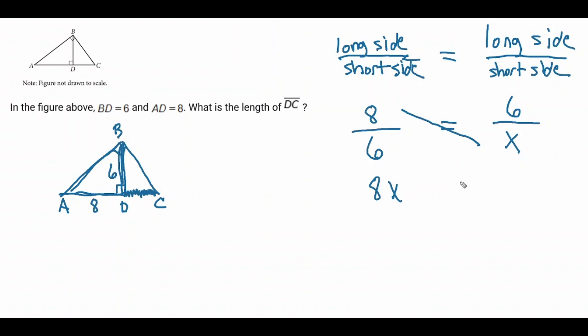8x equals 36, and then you get x by itself, so you divide by 8 on both sides. You throw 36 divided by 8 in your calculator, and you get 4.5. And that's all you got to do.